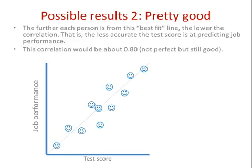Let's look at something less amazing but more realistic. This next scenario I'd be pretty happy with. We haven't got that perfect diagonal line, but we've still got a pretty high correlation — a bigger spread of scores around that best-fit diagonal line. This correlation would be about 0.8: not perfect, but test score is still providing a relatively accurate measure of job performance.